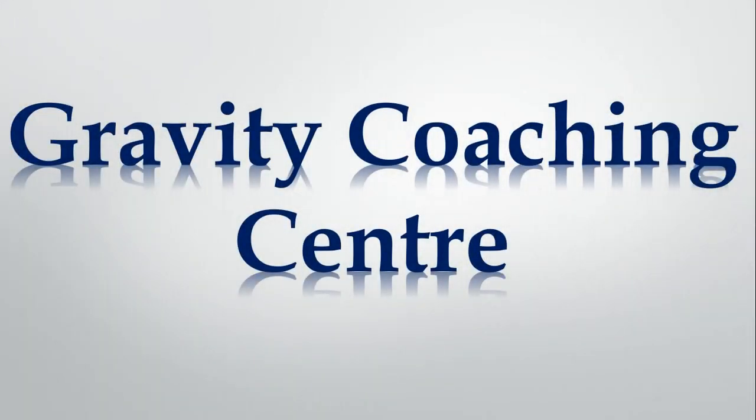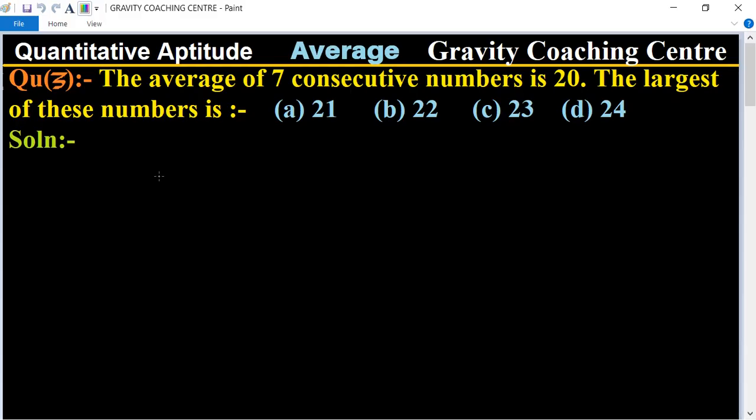Welcome to our channel Gravity Coaching Centre. Quantitative Aptitude, chapter Average, question number 3. The average of 7 consecutive numbers is 20, and the largest of these numbers is which one? So in this question, first of all, we let...